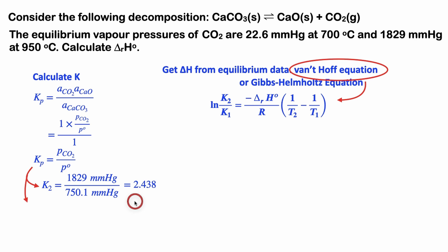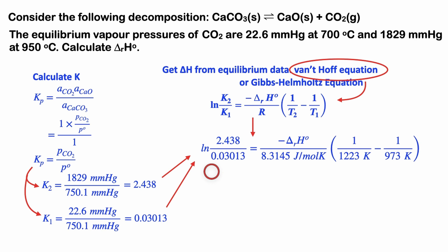So the products are favored. At the other pressure, the equilibrium constant becomes 0.03013, so the reactants are favored.